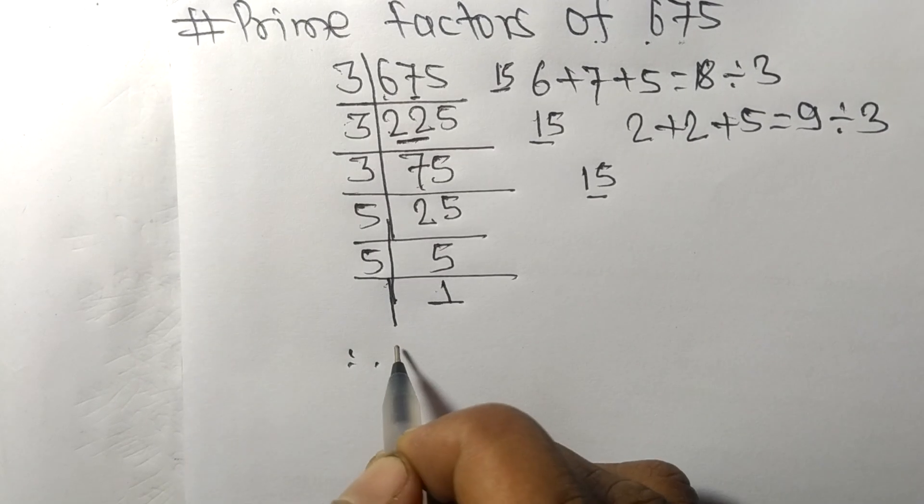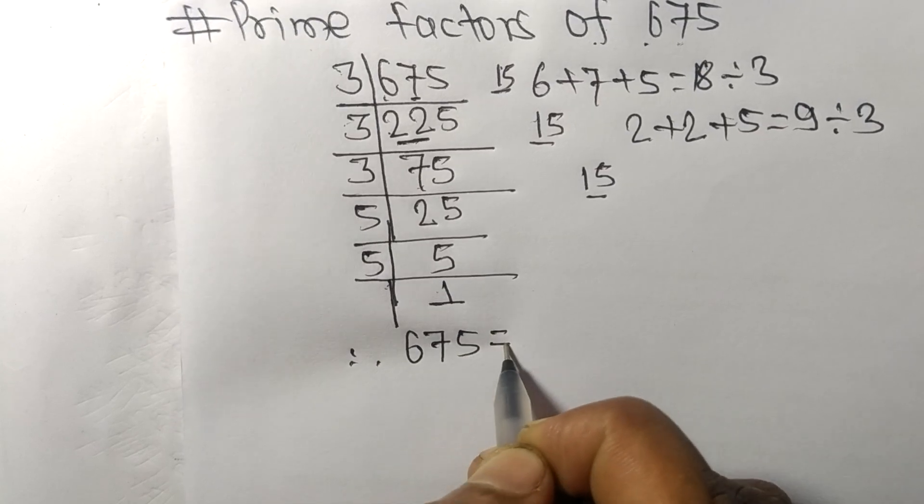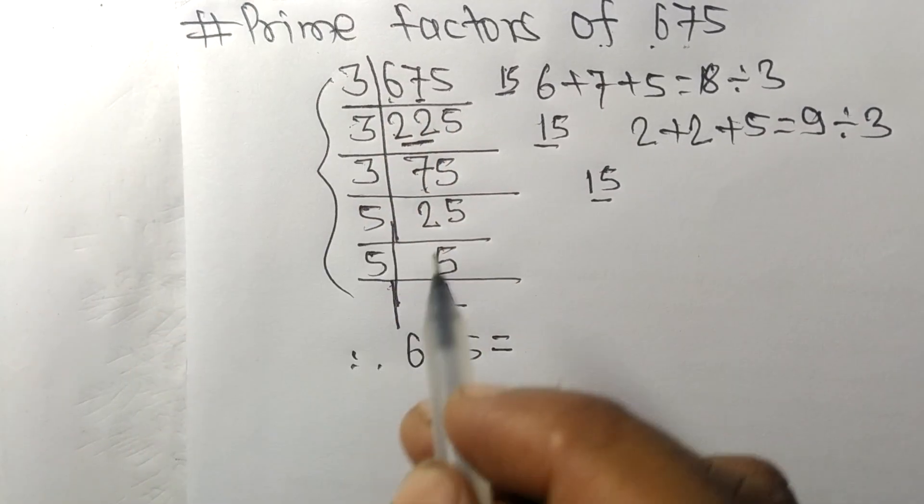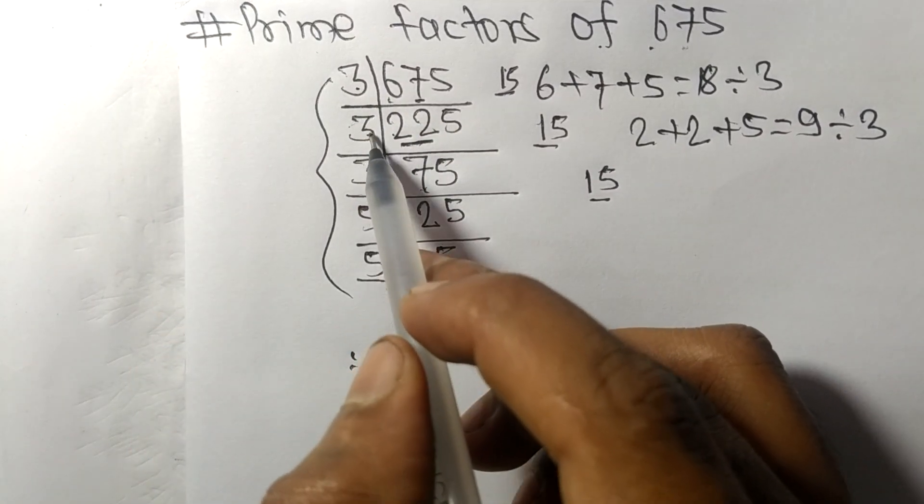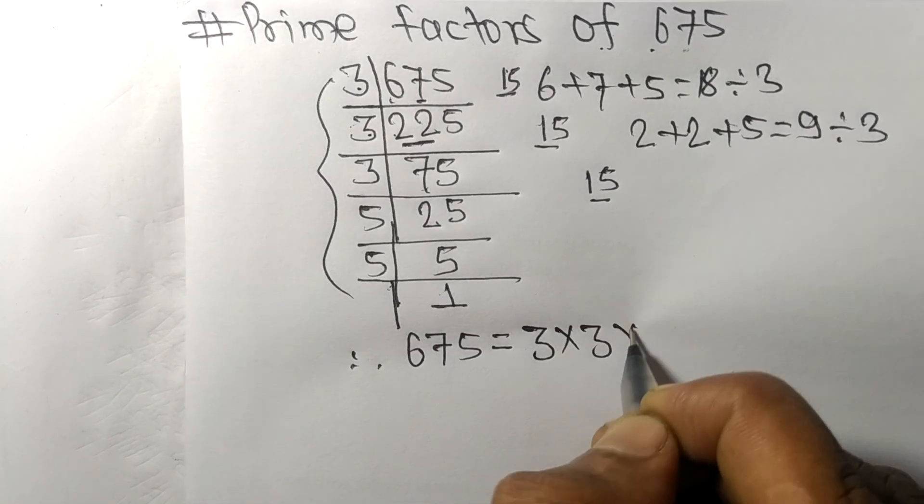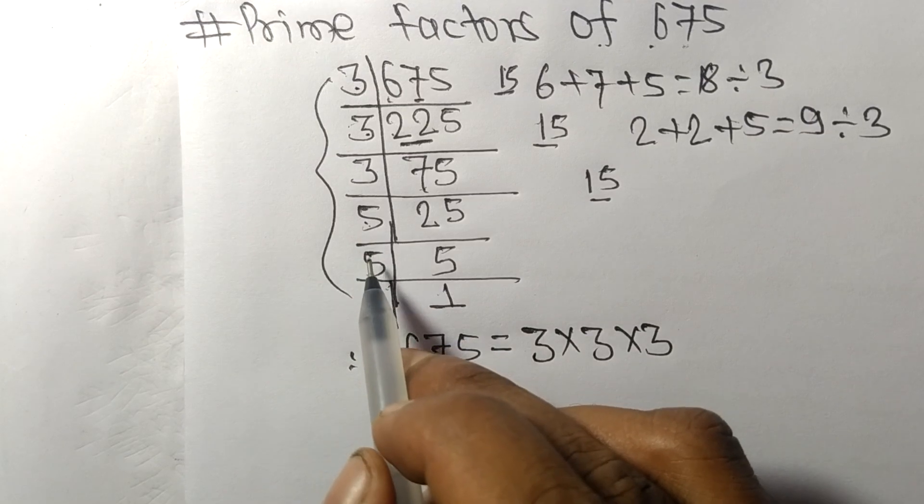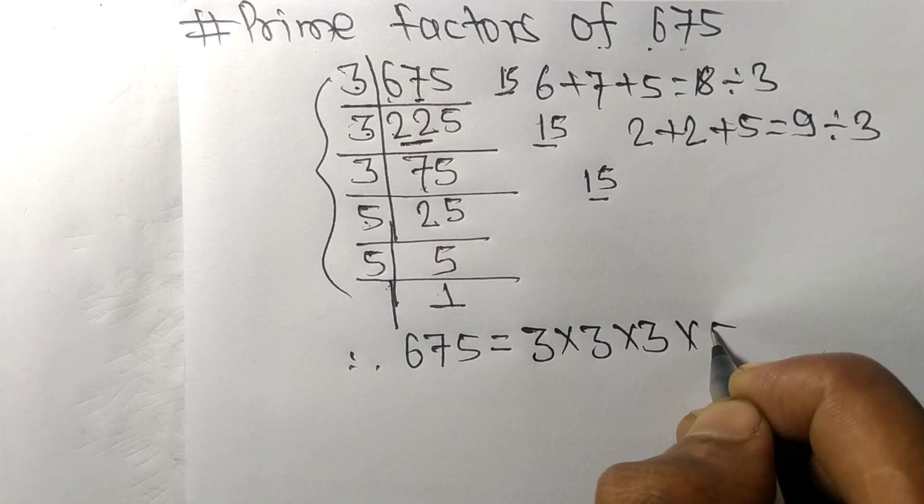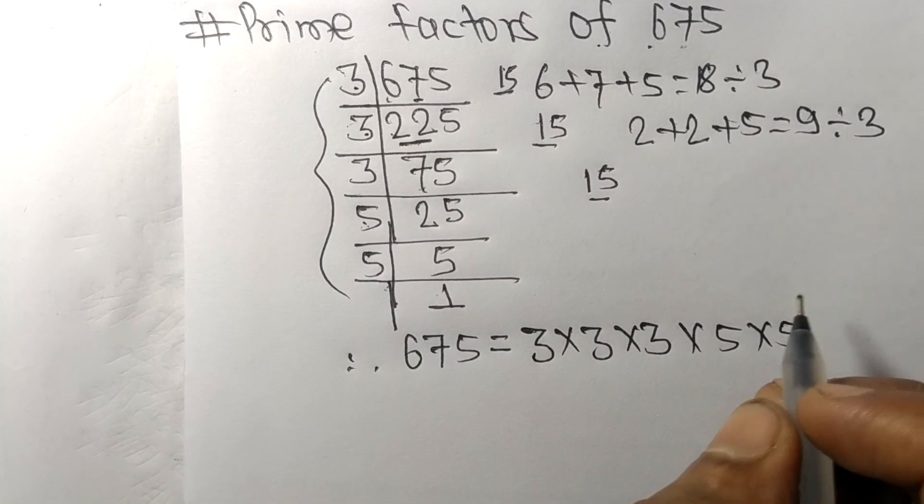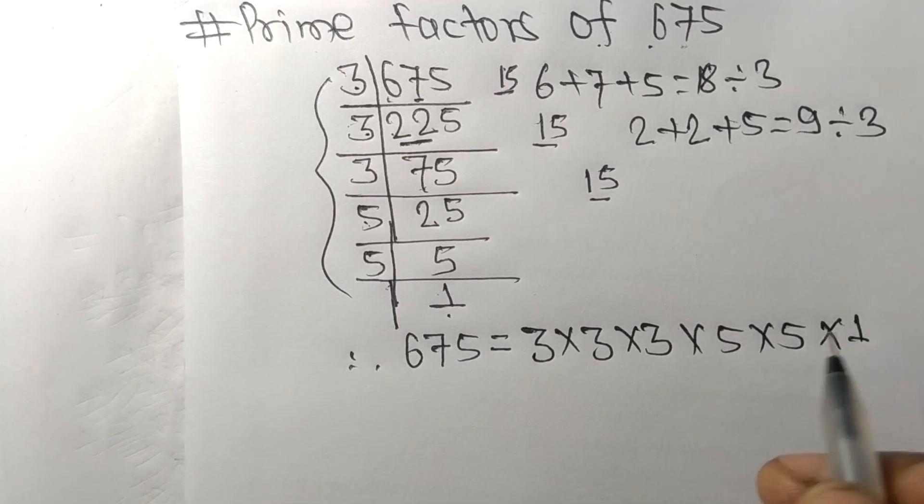Therefore, 675 equals 3 times 3 times 3 times 5 times 5 times 1.